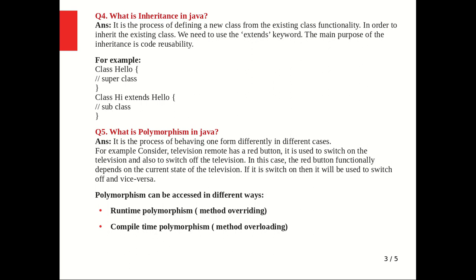What is polymorphism in Java? It is a process of one form behaving differently in different cases. For example, consider a television remote that has a red button — it is used to switch the television on and also to switch it off. The red button's functionality depends on the current state of the television: if it is switched on, it will switch it off, and vice versa. Polymorphism can be achieved in different ways: runtime polymorphism is achieved by method overriding, and compile-time polymorphism is achieved by method overloading.